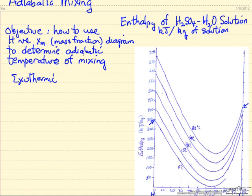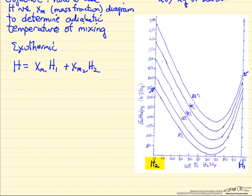If it were ideal, the enthalpy would just be the mass fraction of component 1 times the enthalpy per kilogram of component 1 plus the mass fraction of component 2 times enthalpy 2.